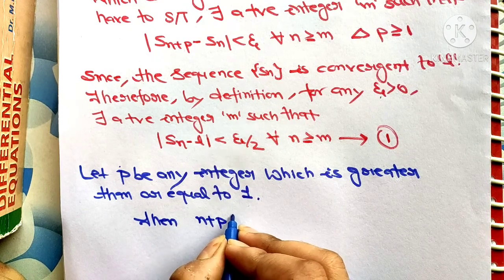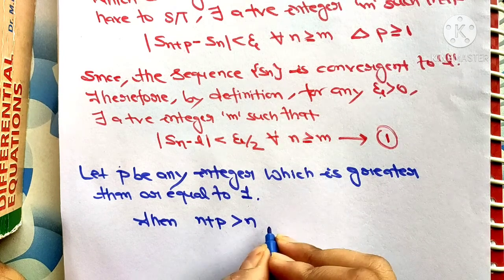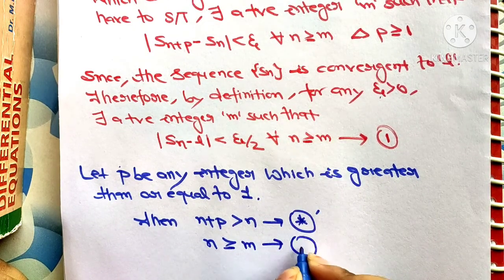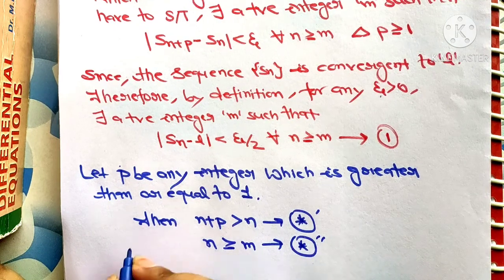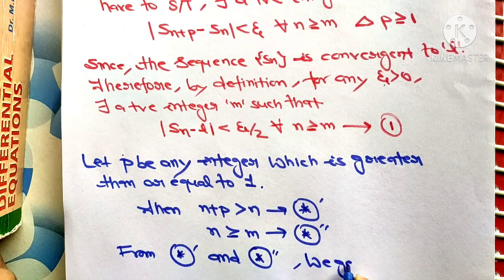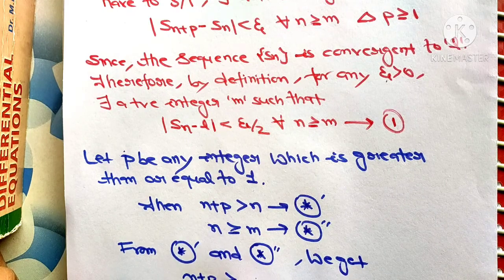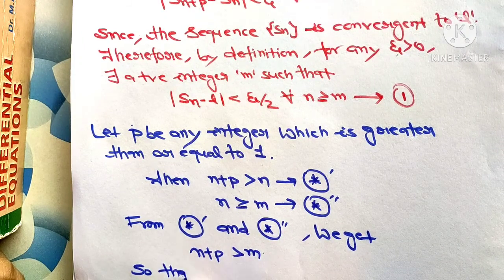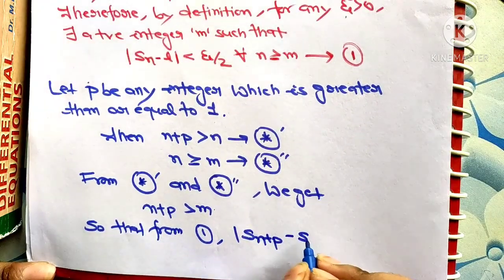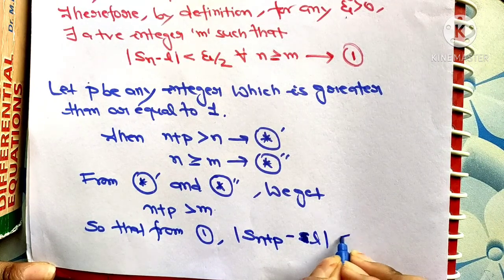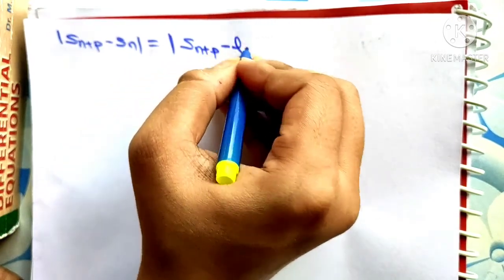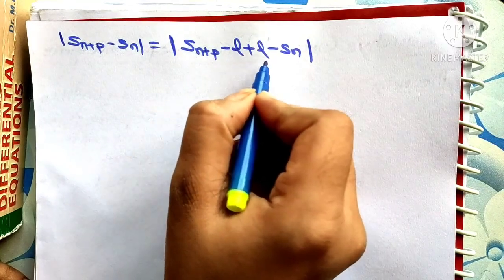Since p ≥ 1, n + p is greater than n, and since n ≥ m, we get n + p > m. Therefore from the convergence condition, |S(n+p) − L| < epsilon/2. Now, Sn+p − Sn equals (Sn+p − L) + (L − Sn), inserting −L and +L in between.